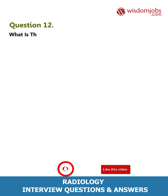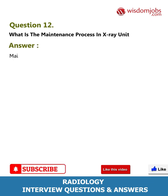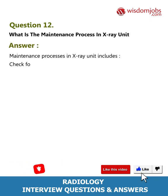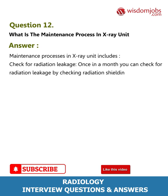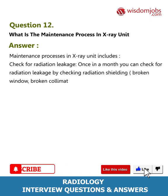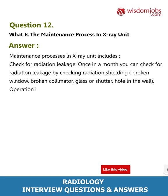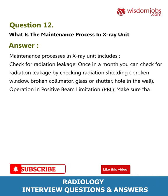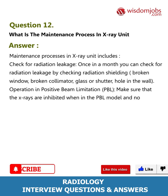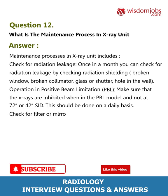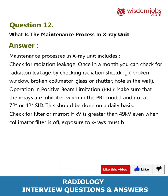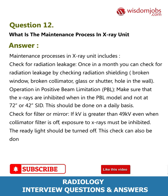Question 12: What is the maintenance process in an x-ray unit? Answer: Maintenance includes: checking for radiation leakage once a month by inspecting radiation shielding, broken windows, broken collimator glass, or holes in the wall. Check operation in Positive Beam Limitation (PBL) mode daily, ensuring x-rays are inhibited when in PBL mode and not at 72 or 42 SID. Check for filter or mirror daily — if kV is greater than 49 kilovolts even when the collimator filter is off, exposure must be inhibited and the ready light should turn off.